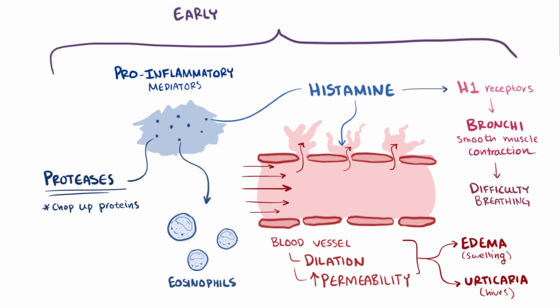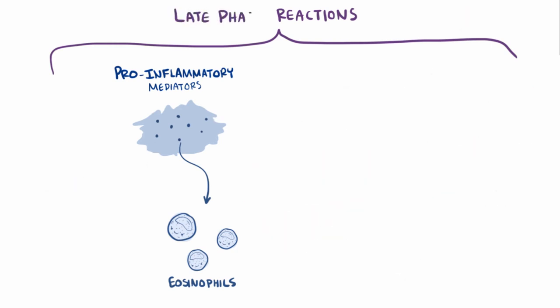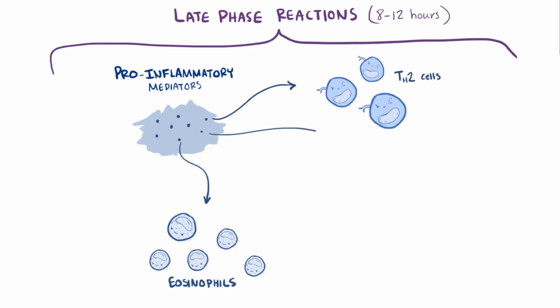The effects of these molecules are called early phase reactions, and they happen within minutes of the second exposure. There are also late phase reactions though, which happen 8 to 12 hours after the second exposure, where even more immune cells like TH2 cells, eosinophils, and basophils, yet another type of granulocyte, are recruited to the site where the allergen is located, because of the cytokines and pro-inflammatory molecules produced during that early phase.